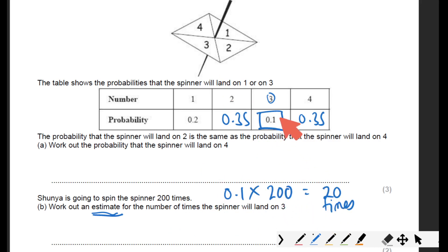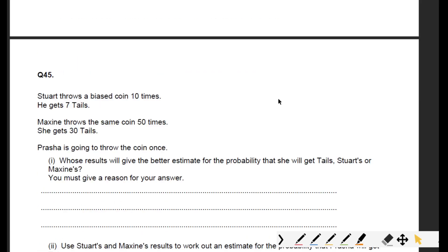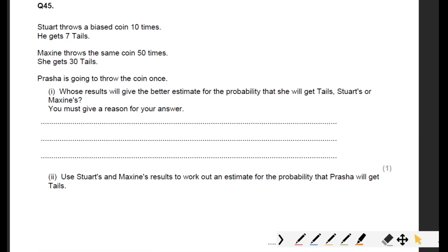Stuart throws a biased coin ten times. He gets seven tails. Maxine throws it 50 times and she gets 30 tails. Prasha is going to throw the coin once. Whose results will give the better estimate for the probability that she will get tails, Stuart or Maxine?